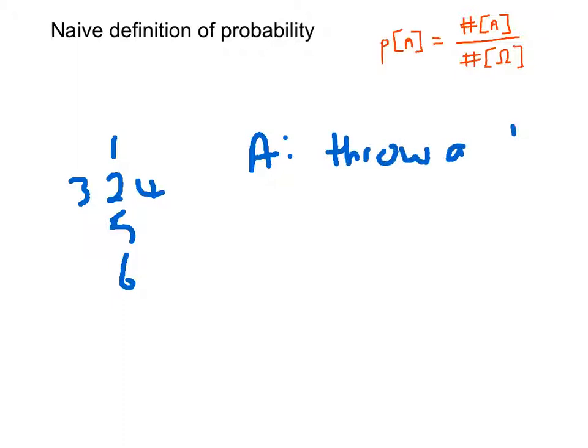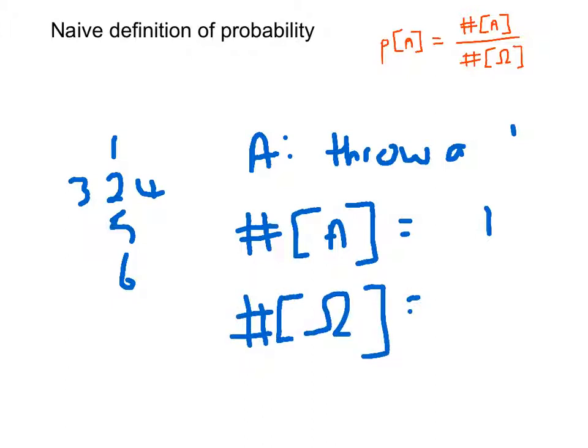And as we can see, the number of ways in which A can occur are equal to one. And the number of things that can happen in the sample space are equal to six. So the probability of A is given by one over six.